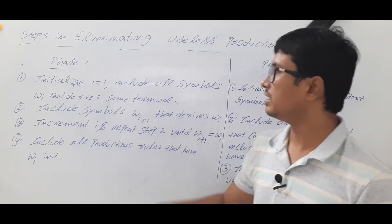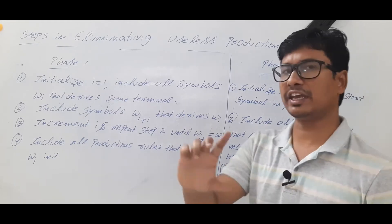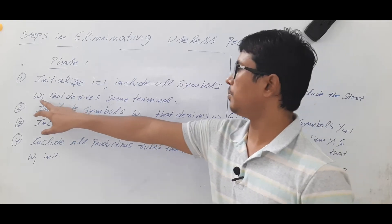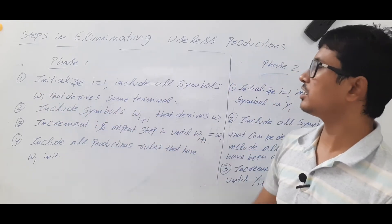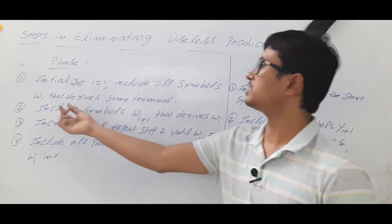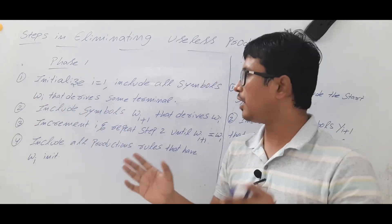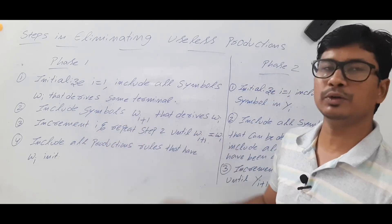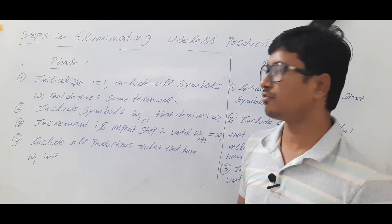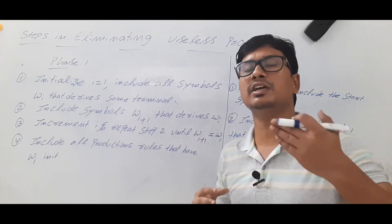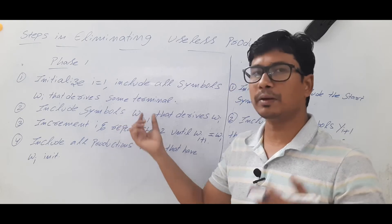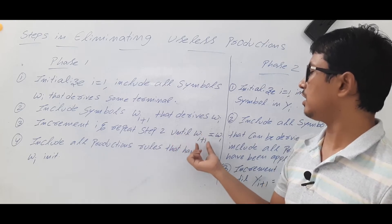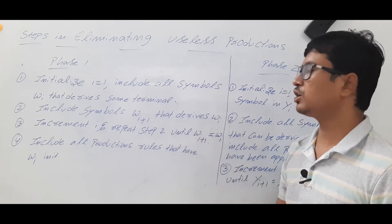In phase 1: initialize i equal to 1. Include all symbols W_i that derive some terminals — take a W_i symbol and add all the terminals it produces. Then include symbols W_{i+1} that derive from W_i — from W_i you get some symbols that can derive something, and you add them to W_{i+1}. Now increment i and repeat step 2 until W_{i+1} equals W_i.